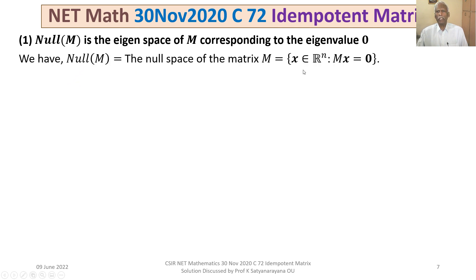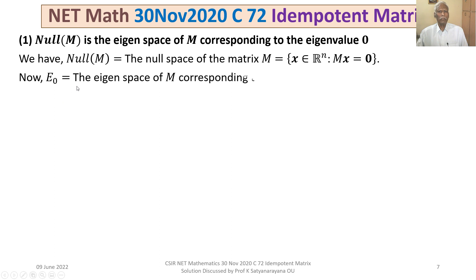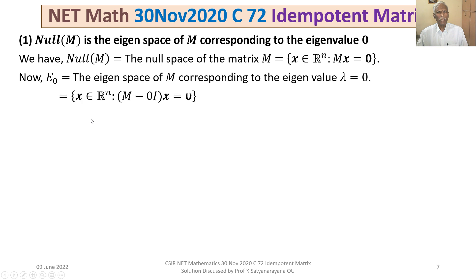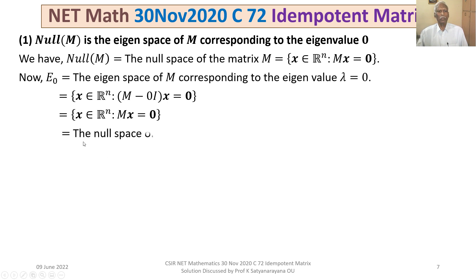The null space of M is the set of all x ∈ ℝⁿ such that Mx = 0 — also called the kernel of M. And E₀, the eigenspace for λ = 0, is the set of all x ∈ ℝⁿ such that (M − 0·I)x = 0, i.e., Mx = 0. This is precisely the null space of M. Therefore null(M) = E₀, and Option 1 is true.